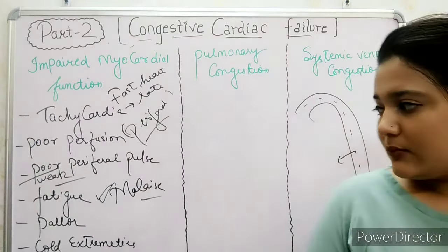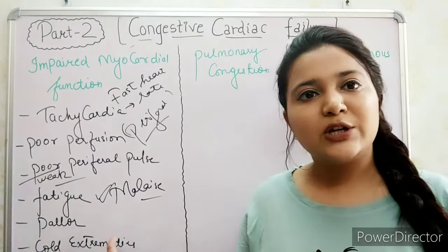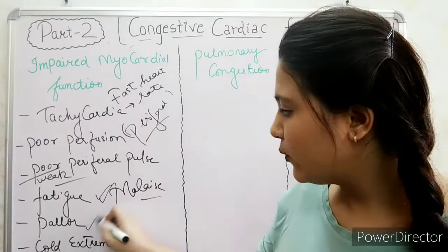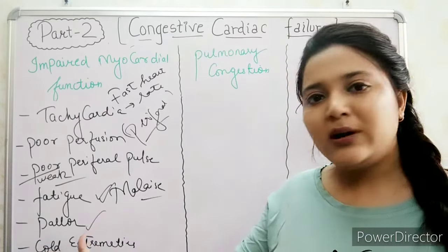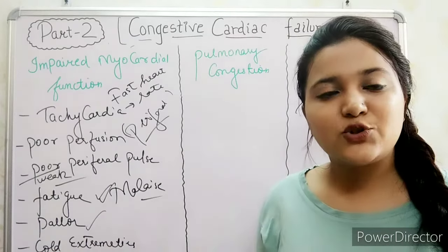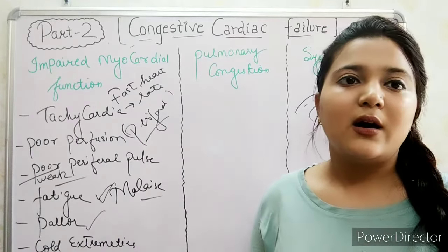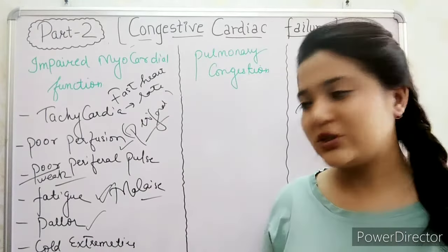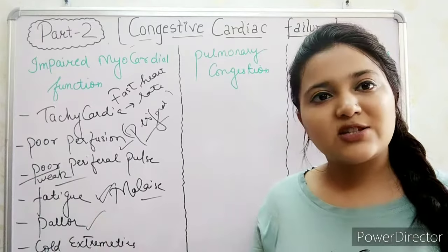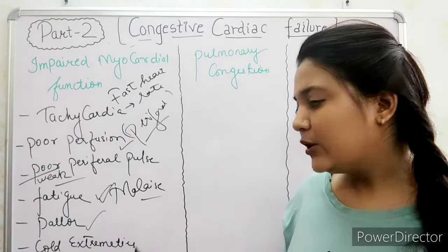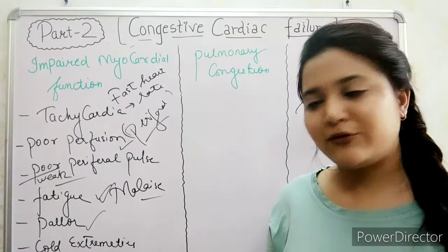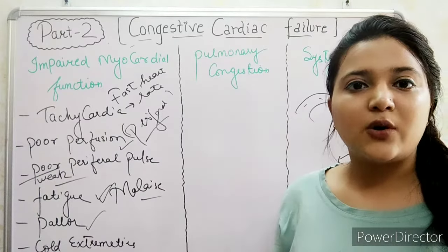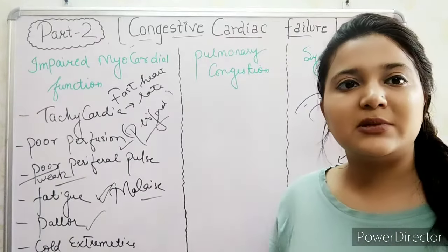Pallor occurs because blood circulation is not good. Cold extremities will be present due to poor peripheral perfusion — because blood supply is not enough. Next is activity intolerance, which occurs due to cold extremities.